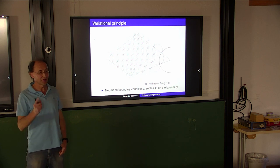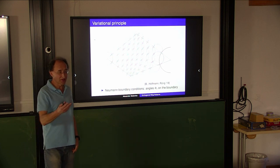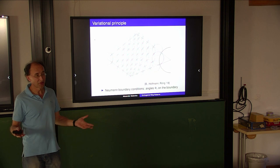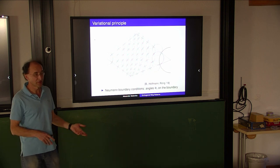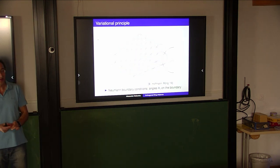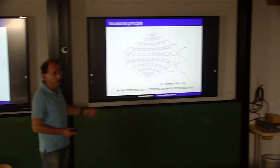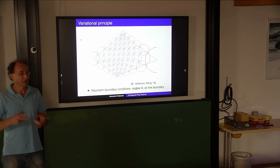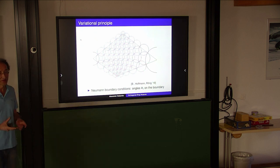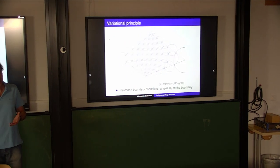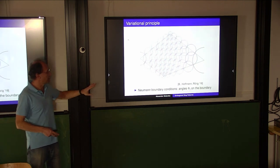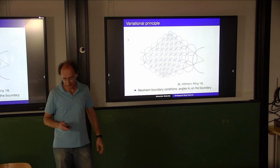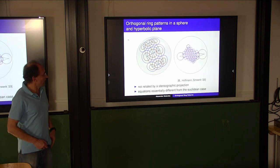What's the difference between circle patterns and ring patterns? Circle patterns have one additional symmetry: you can apply any Mobius transformation. Circles are mapped to circles and orthogonality is preserved. But here you are dealing with concentric circles. If you apply a Mobius transformation to a pair of concentric circles, it will not be concentric anymore. So this structure is not Mobius-invariant - that's the difference.